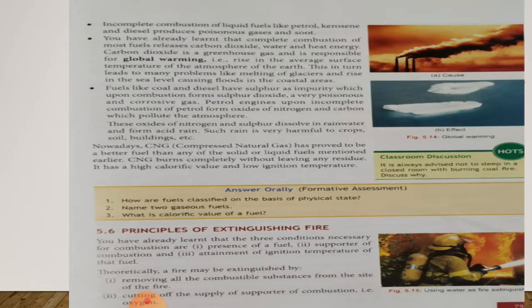So we have understood that if a fuel is completely combusted, it releases carbon dioxide and water. Carbon dioxide is a greenhouse gas that is responsible for global warming. Our earth gets warm due to increase of carbon dioxide gas, which leads to melting of glaciers and rise in the sea level, causing floods in the coastal areas.